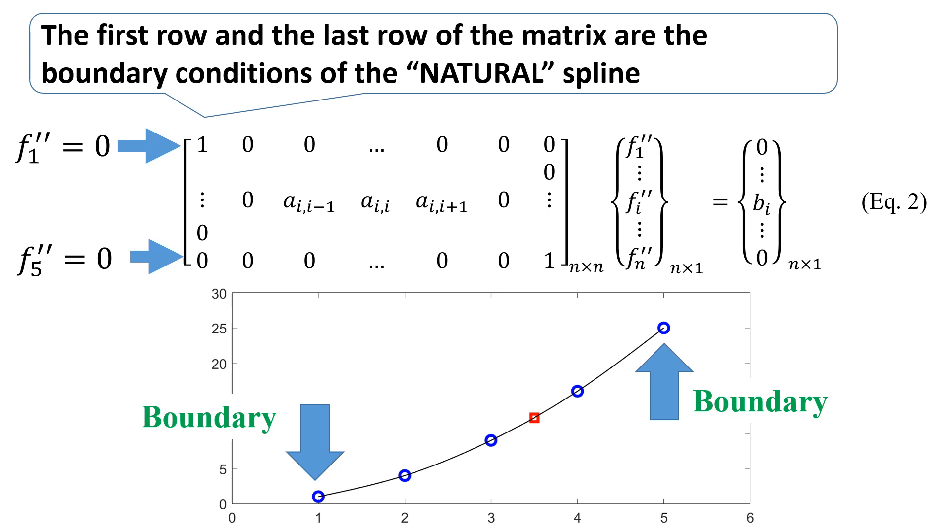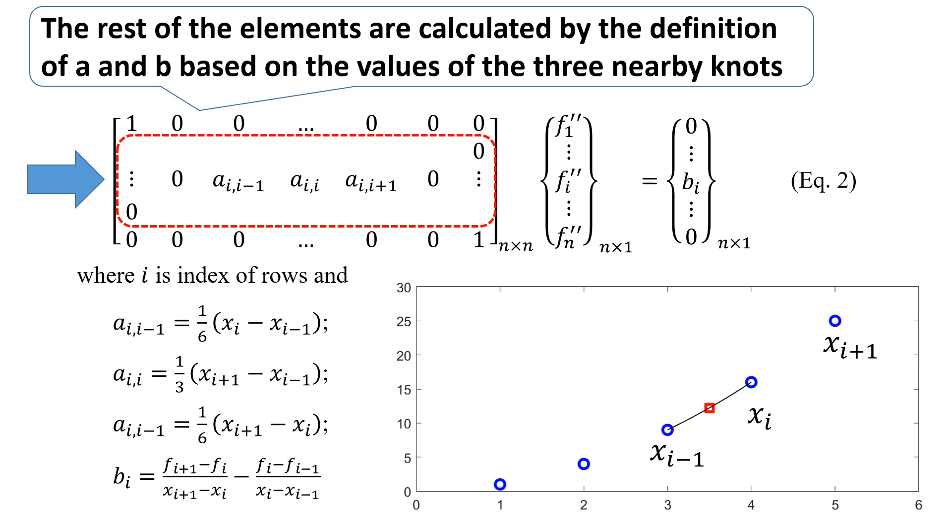The rest of the elements are calculated by the definition of A and B based on the values of the three nearby knots.